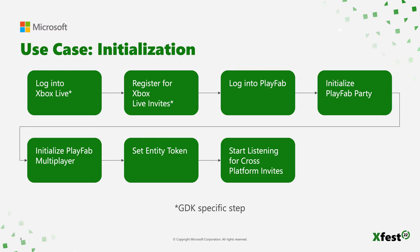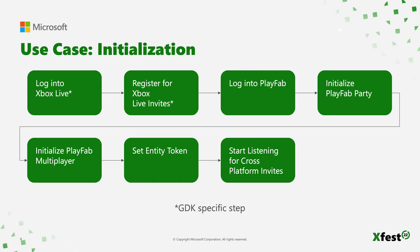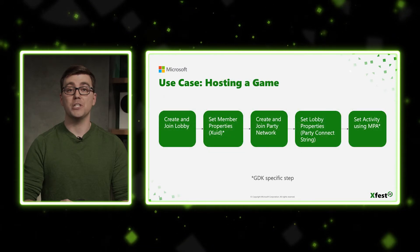For initialization, you first log into Xbox Live, then register for Xbox Live invites. After that, you log into PlayFab, and if you're using PlayFab Party for networking, you initialize it next. You then initialize the PlayFab Multiplayer library and set the entity token, which creates the WebSocket connection used for state change events. If your title wants to use PlayFab Multiplayer for cross-platform invites, start listening for them — you'll then receive invite state change events with all the data needed to join another player's game. Once these steps are complete, you're ready to use lobby and matchmaking features.